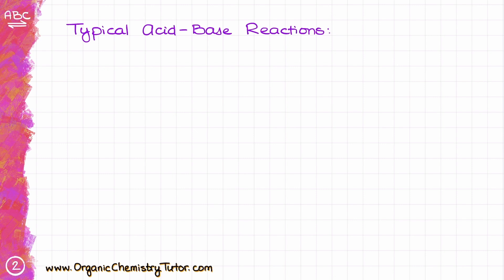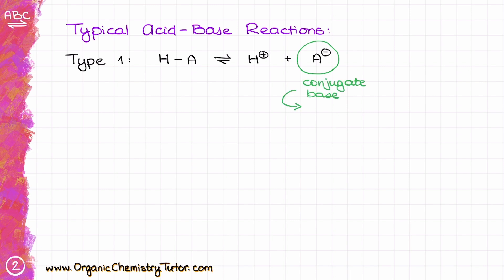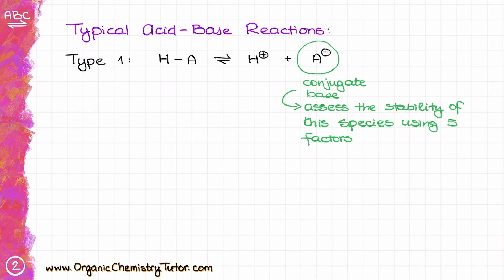First, let's look at typical acid-base reactions. Type 1 is where we have our acid dissociating into H+ and our conjugate base, which I'll denote as A-. In this case, we are going to solely focus on the structure of our conjugate base and assess its stability using five different factors.